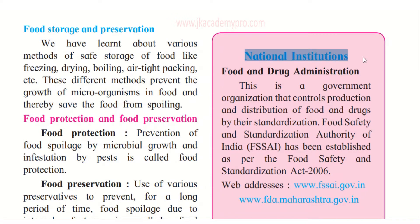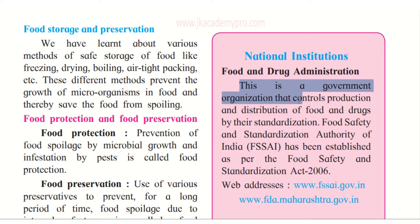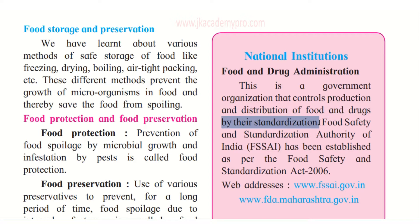National Institutions — what are they? The Food and Drug Administration is a government organization that controls production and distribution of food and drugs, including all our medicines, by their standardization — there is a quality test that goes on before it is sent for distribution. And the Food Safety and Standardization Authority of India, in short FSSAI, has been established as per the Food Safety and Standardization Act 2006. You can learn more about this organization by visiting the following sites.